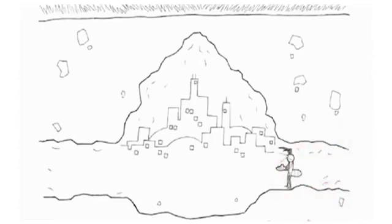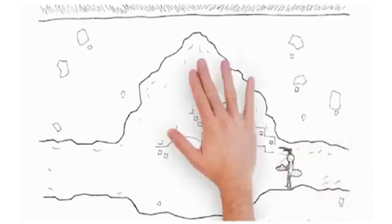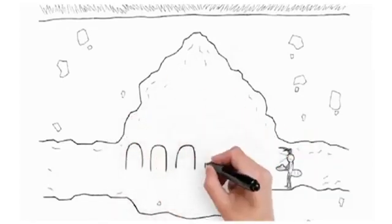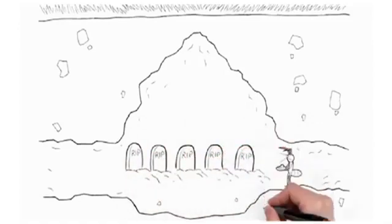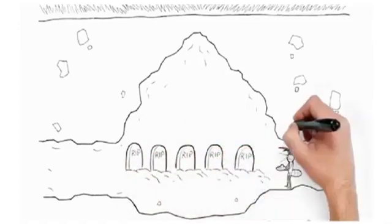Once termites are detected, the bait toxicant is placed in the active stations and when ingested, the patented active ingredient hexaflumeron prevents the workers from molting and when they can't molt, they die.